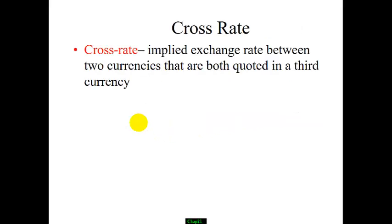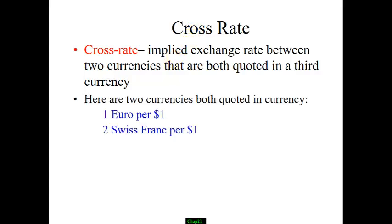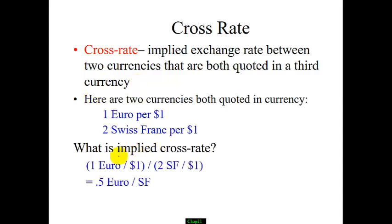Sometimes you want to figure out the exchange rate between two currencies that are both quoted in a third currency — for example, both quoted in US dollars. So how do you find the cross rate between the euro and Swiss franc? You simply divide the two exchange quotes and get, for example, 1.3 francs equal to 0.5 euros.